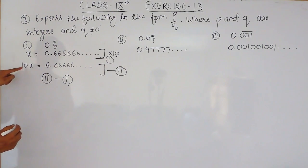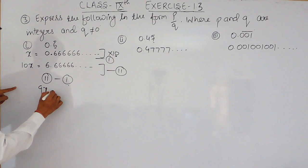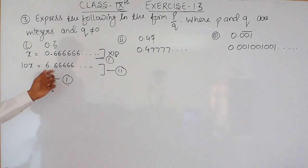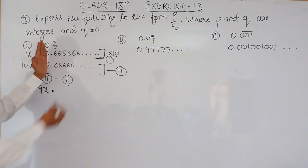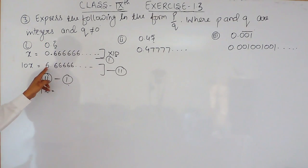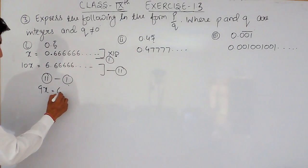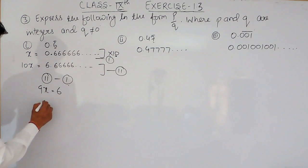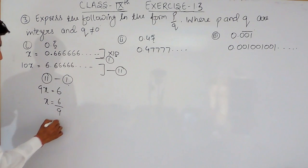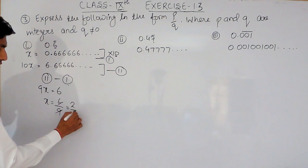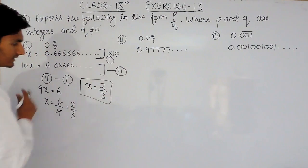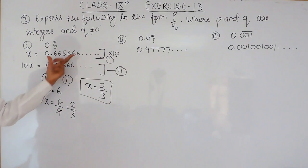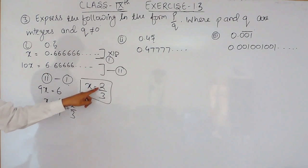When x is subtracted from 10x we get 9x. Subtracting 0.6666... from 6.6666..., the decimal parts cancel out and the result is 6. So 9x equals 6, which gives x equals 6 upon 9. Simplifying, x equals 2 upon 3. So the value of the expression is 2 upon 3.